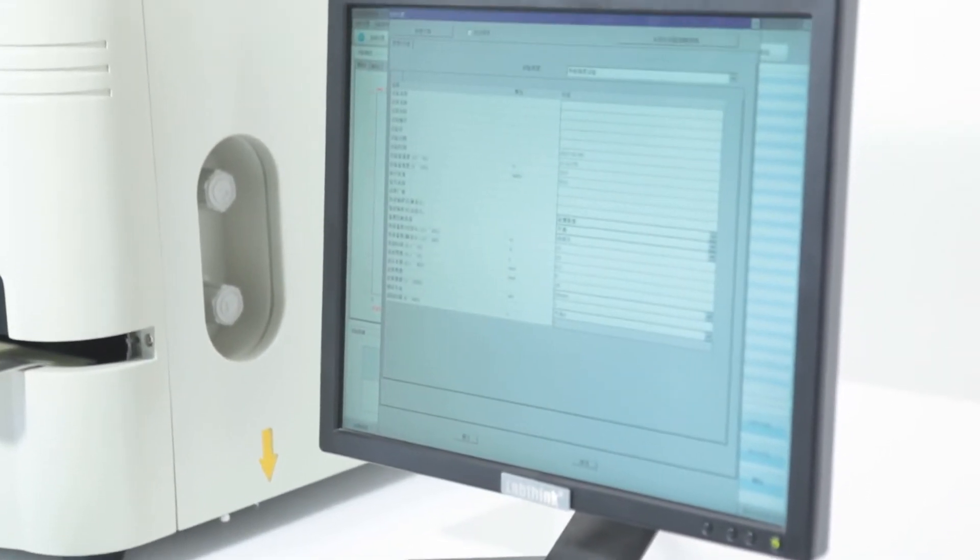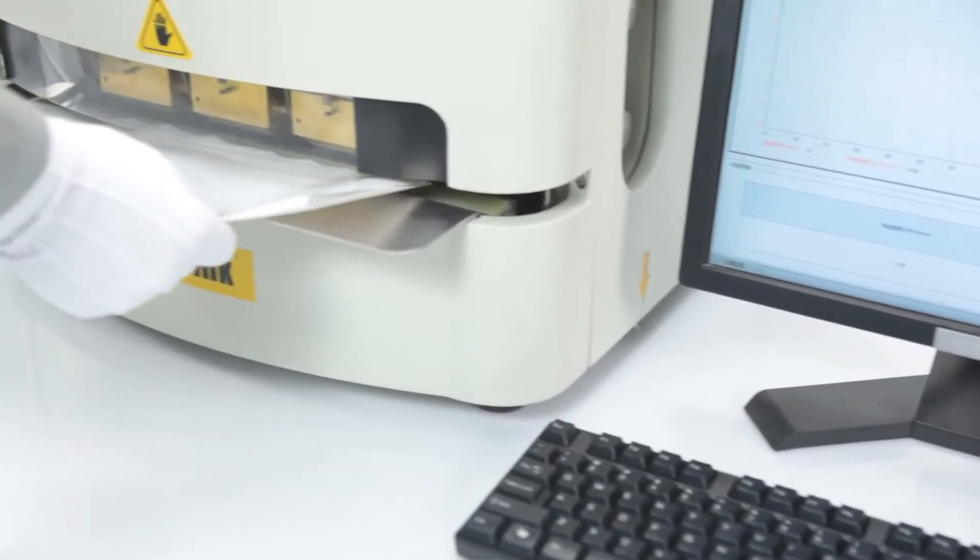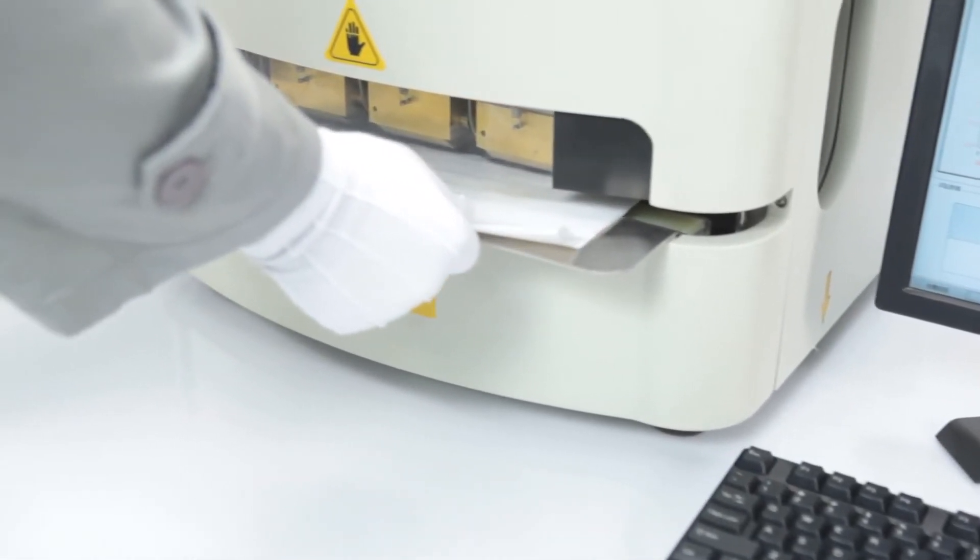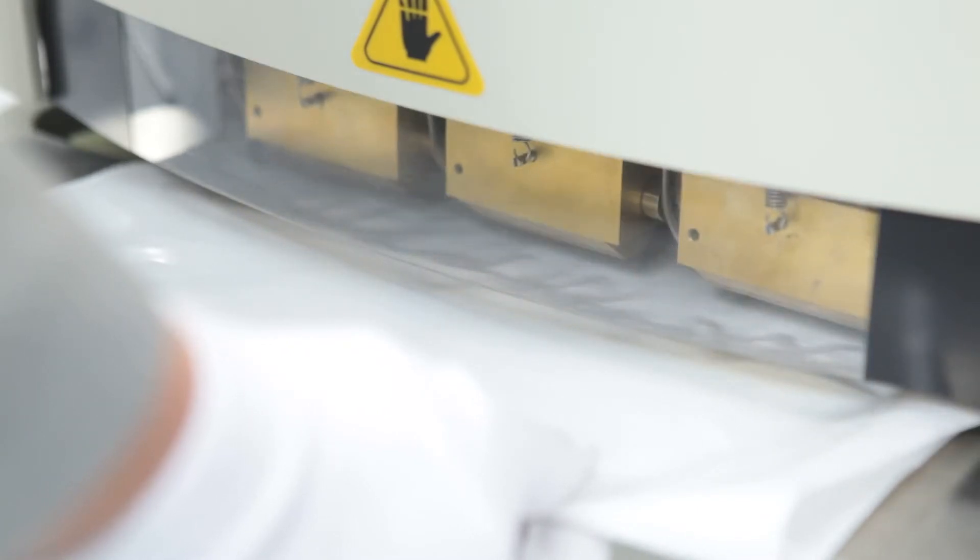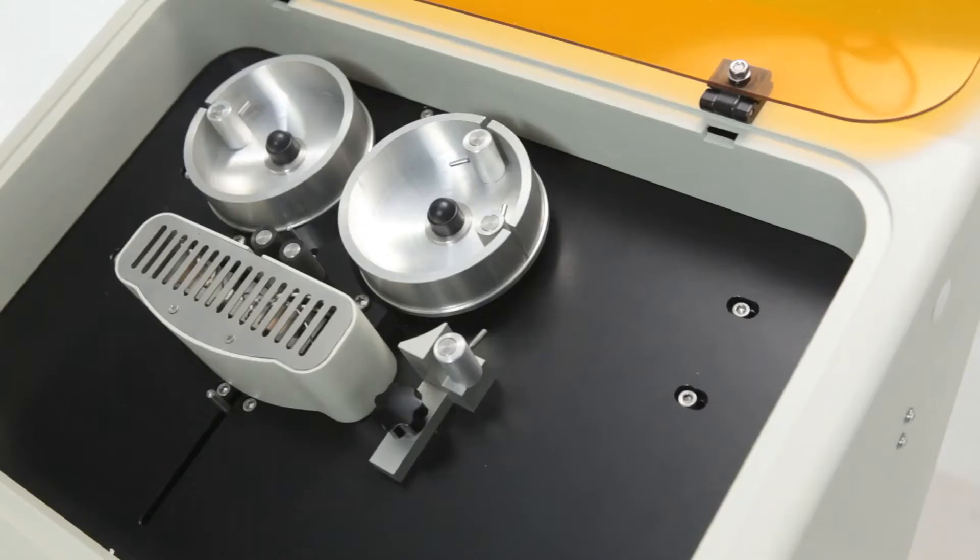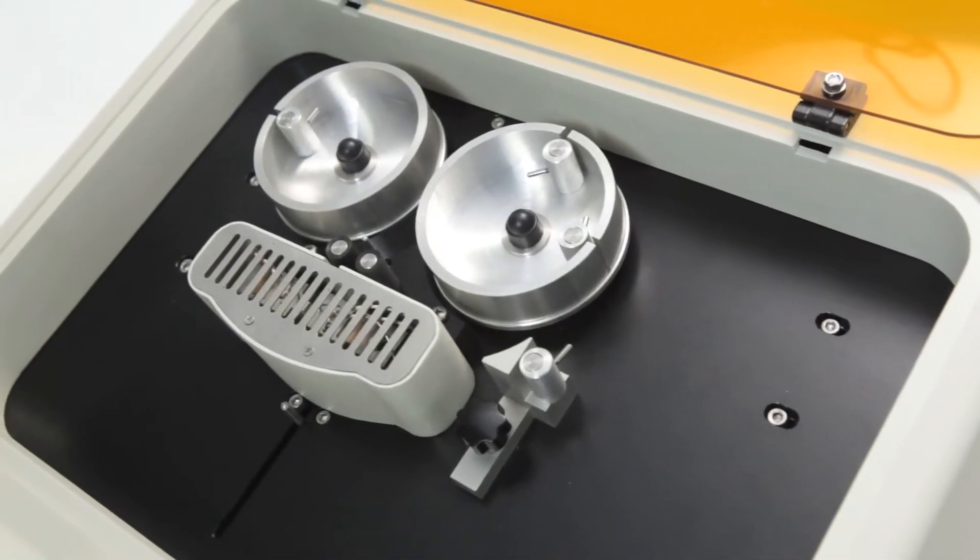By testing the specimen at a certain speed under a certain sealing pressure and at three different sealing temperatures in one single test, the ideal sealing parameter can be determined rapidly and accurately. Moreover, the heat seal strength of the specimens can be measured within 20 seconds.